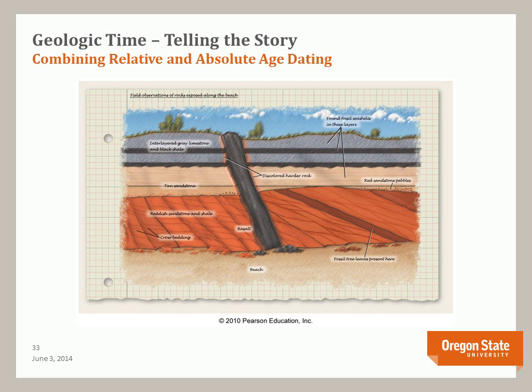Now we can combine relative and absolute age dating to produce an accurate story for a field diagram showing sedimentary layers and a cross-cutting igneous dike. We can interpret depositional environments, note the presence of angular unconformities, non-conformities, and changes in depositional environment. The textbook, on page 275, goes through a detailed narrative of how this is done — this is the real work that geologists do, and it's quite interesting.